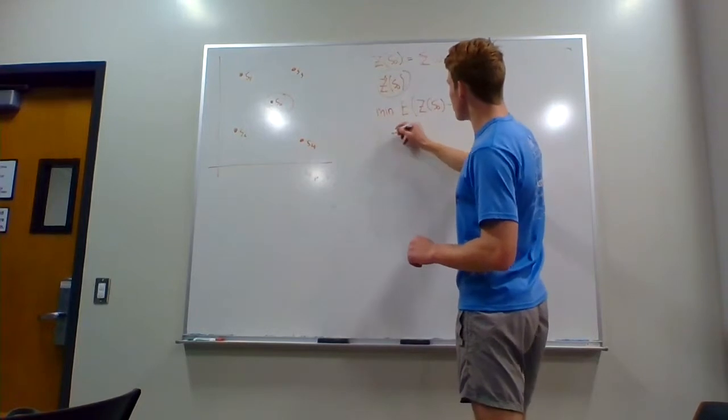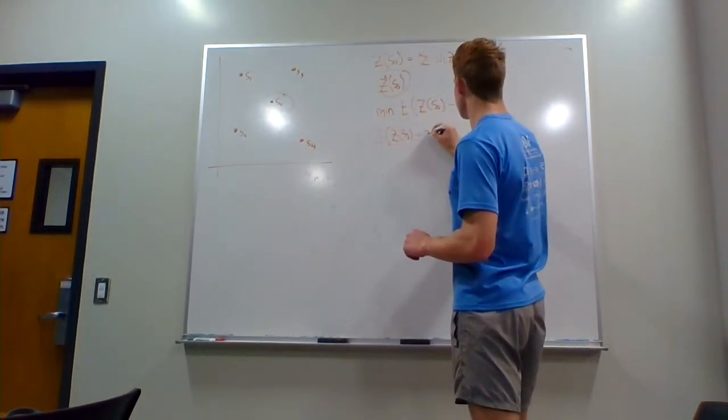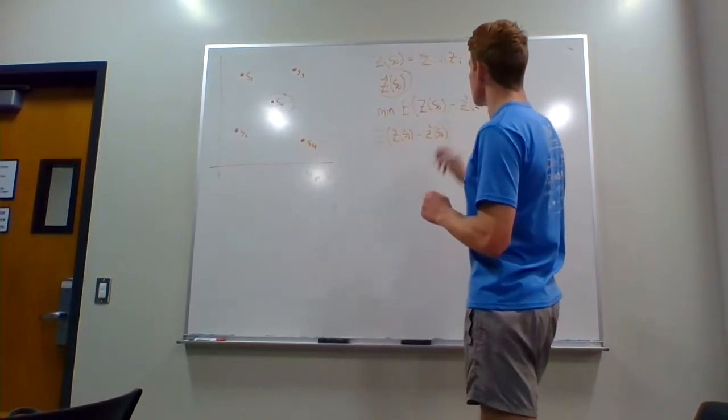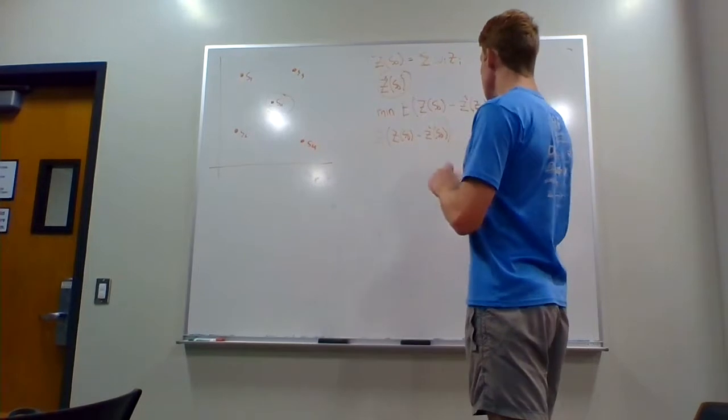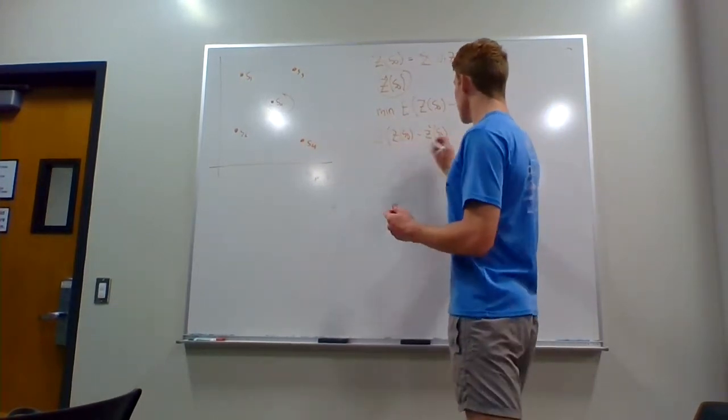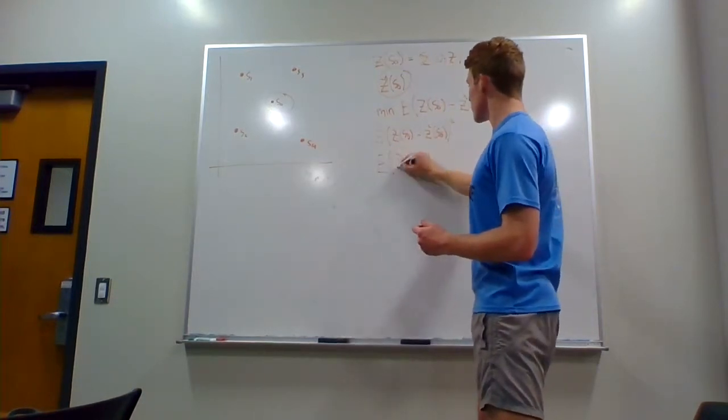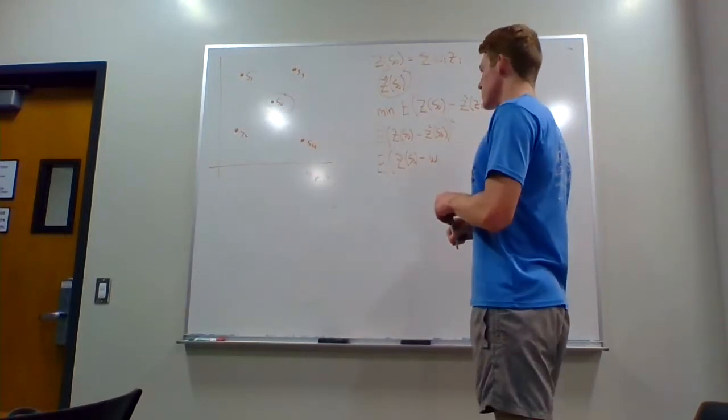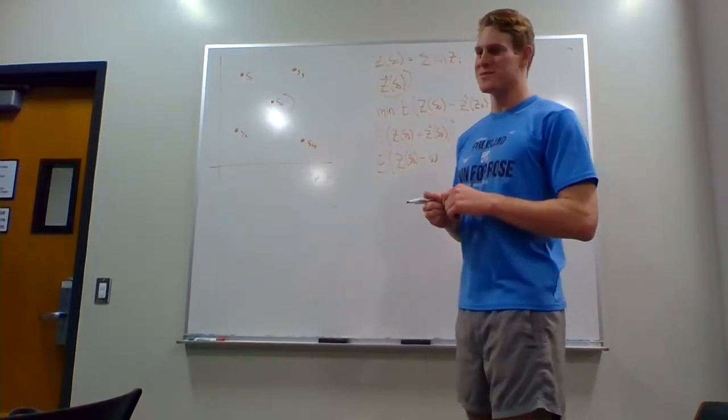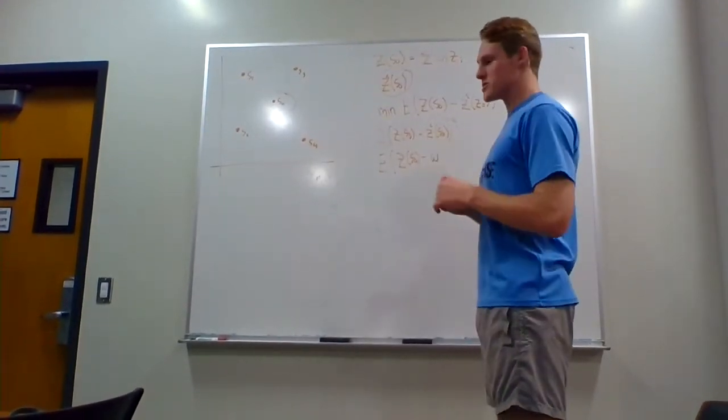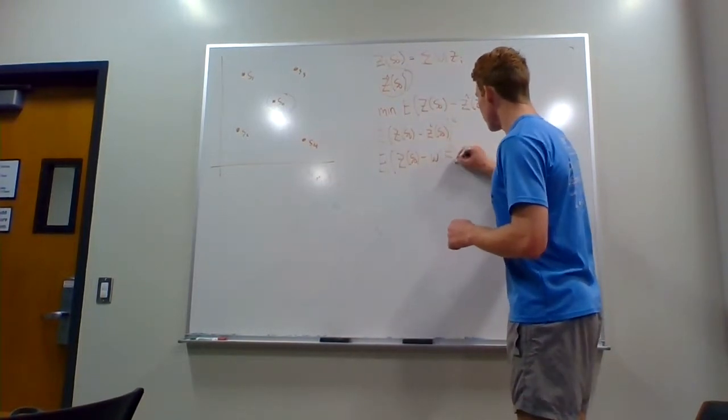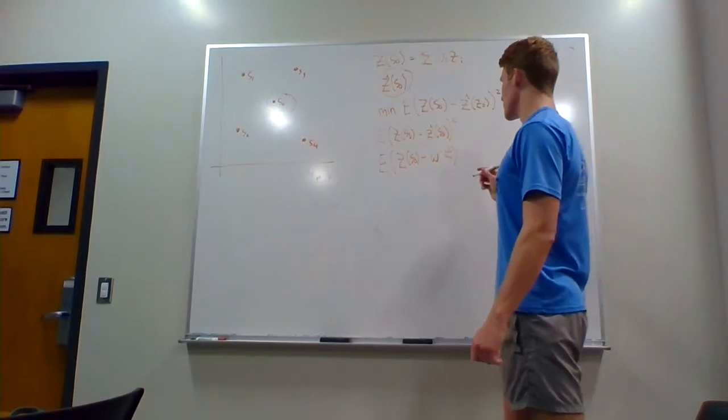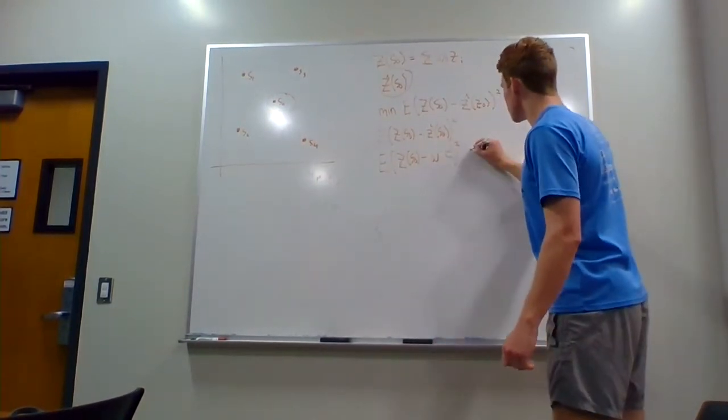And so we're going to run through this equation here really quickly and show you how we come up with an equation for Z hat of S zero for an estimator of the data value at point S zero. So we're going to start with simplifying this expression, the expected value of Z of S zero minus Z hat of S zero. So we know that Z of S zero is going to be a combination of the other Zs, the other data point values. So we can write it as Z of S zero minus, and I'm going to do this in matrix form. If you're not familiar with that, then you're going to have to consult one of my previous videos from another course. But for now, just bear with me here. This is going to be the weights, so the vector of the weights multiplied with the vector of the data point values, and this is still squared.